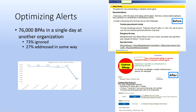Here was an example I saw: one organization tracked their alerts and had 76,000 BPAs in a single day. 73% of them were ignored, and only 27% caused the clinician to really do anything. This tells you it's not an effective alert system — 73% being ignored means there are a ton of useless alerts, and maybe some important alerts are being ignored as well because there are just so many. So they made a lot of changes and tried to reduce the number of alerts so only the really important ones would get through.